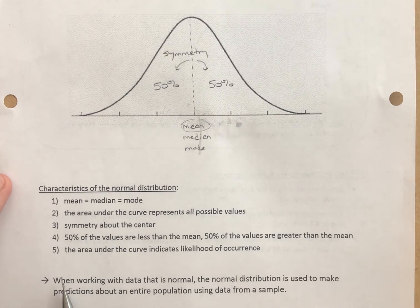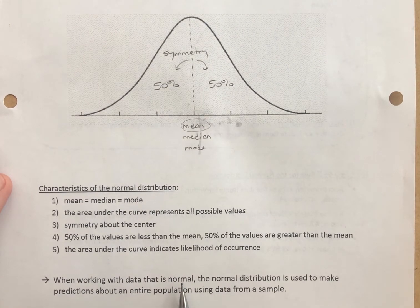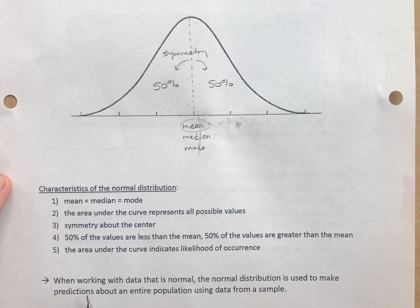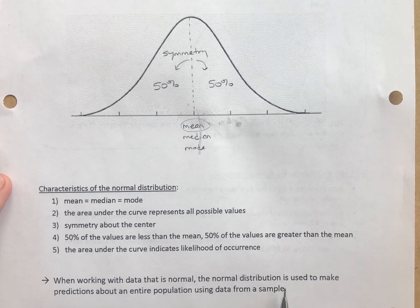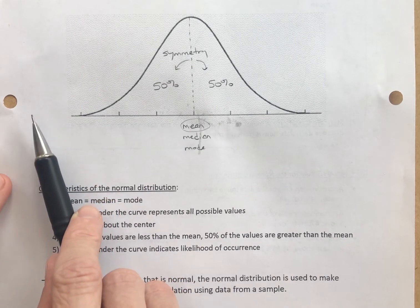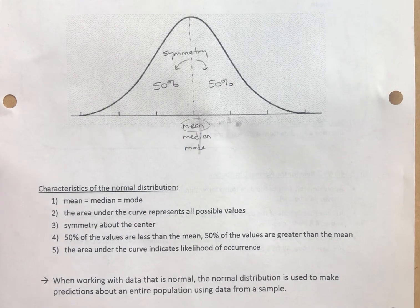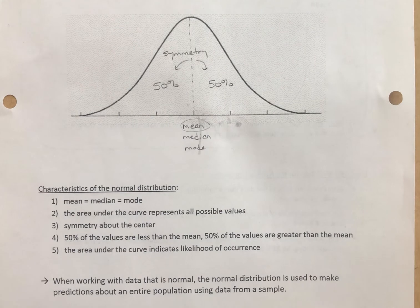When working with data that is normal — and this includes a number of areas in our lives, things we do, and things we make — the normal distribution is used to make predictions about an entire population using data from a sample. We'll take a sample of data, recognize that it's normal, and then make predictions about it, which is very useful. Next up, we'll start talking about the 68-95-99.7 rule.